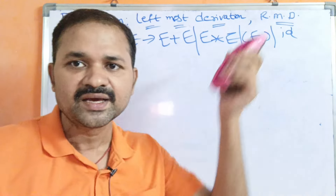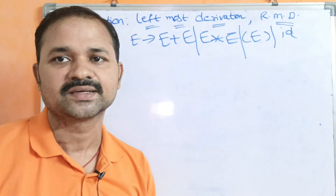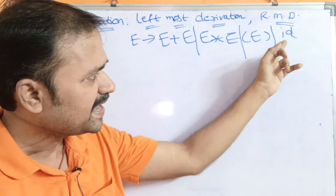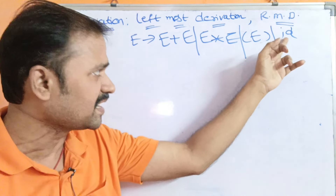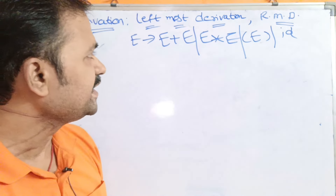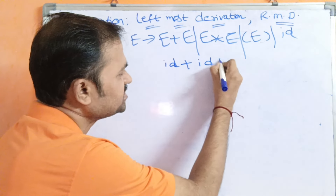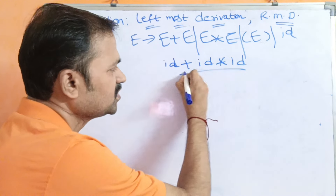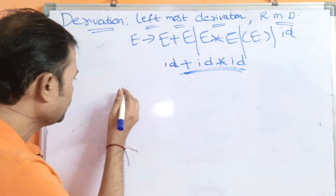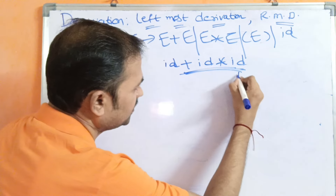In this grammar, what are the non-terminals? We have only one non-terminal, that is E — non-terminals are uppercase letters. The terminal nodes are plus, star, left parenthesis, right parenthesis, and id. The id is a terminal because it is in lowercase form. Our target is to obtain the string id plus id star id using leftmost derivation and rightmost derivation.